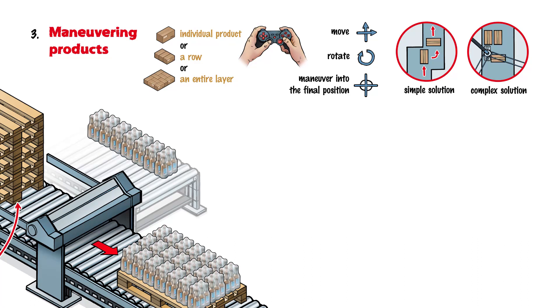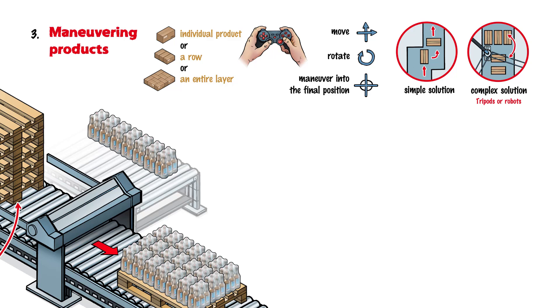Complex solutions often carry out alignment and pre-grouping processes using tripods or robots. This means many different products can be positioned and flexible layer patterns can be created.